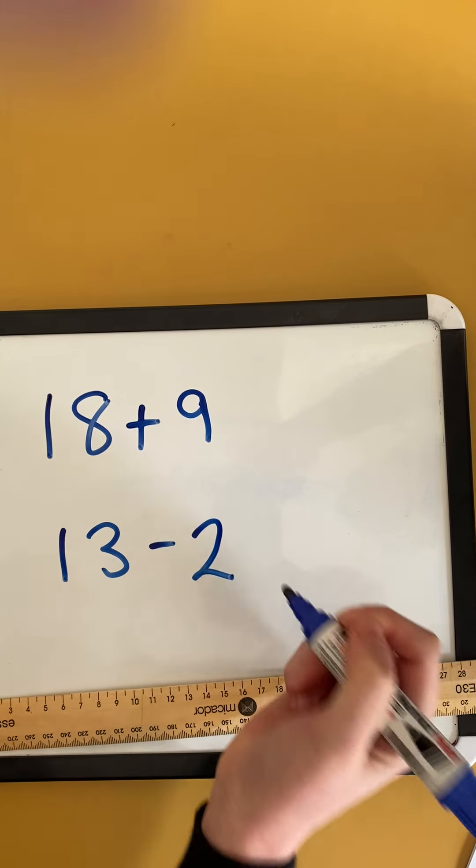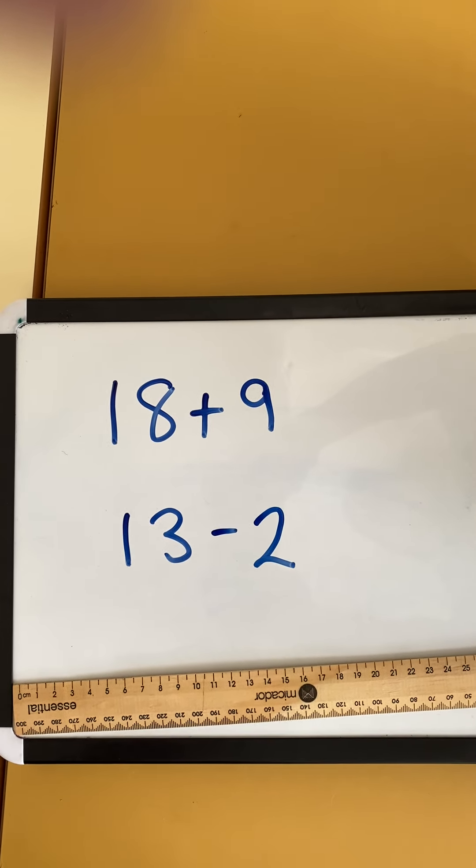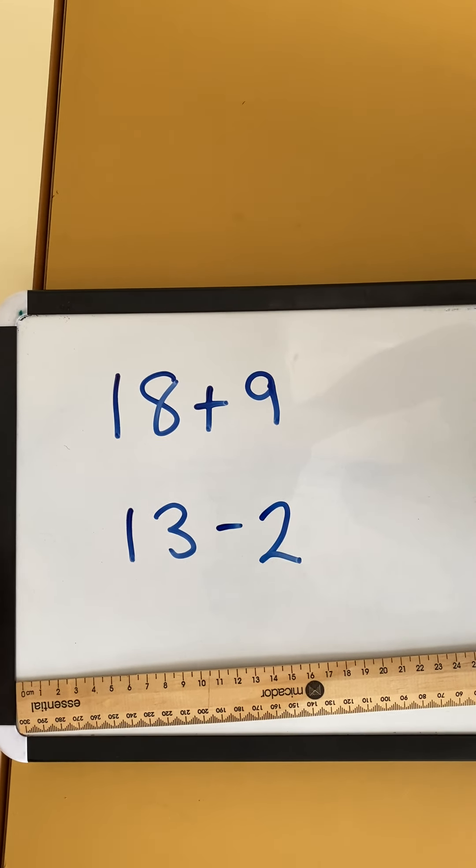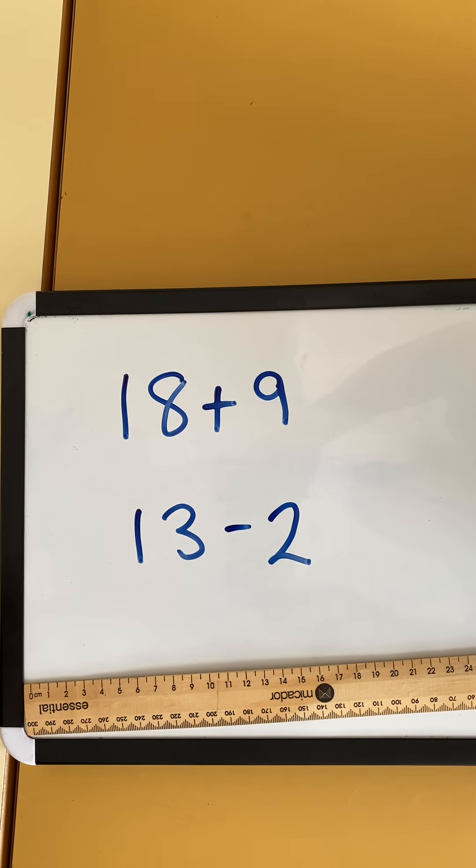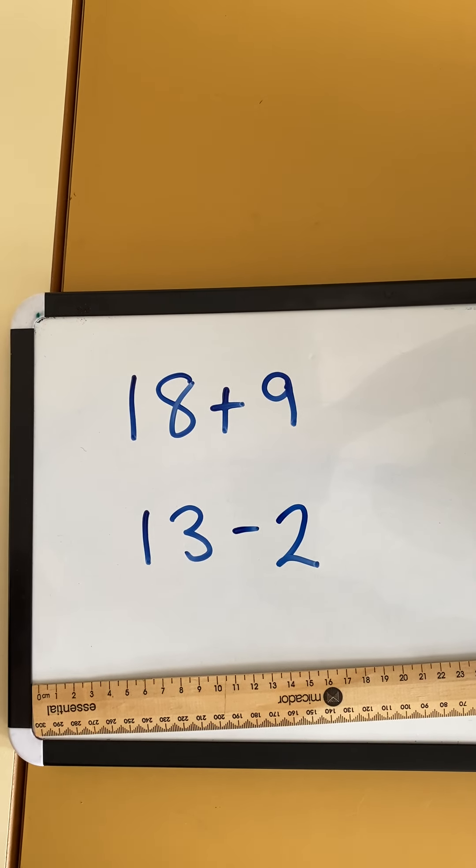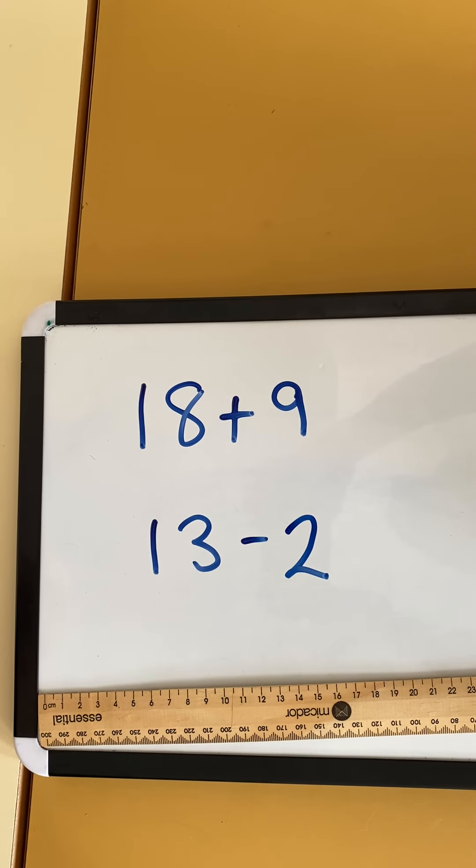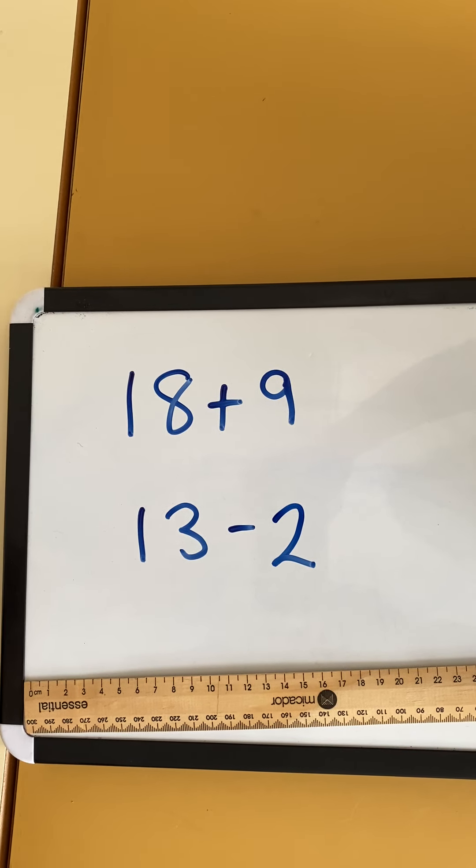Now I have two problems for you. 18 plus 9 and 13 take away 2. I would like you to have a go at answering these problems and tell me how you worked it out. Did you use the bridging strategy or did you use the counting on or counting back strategy? Once you've done this, you might like to take a photo and upload it to your maths team.